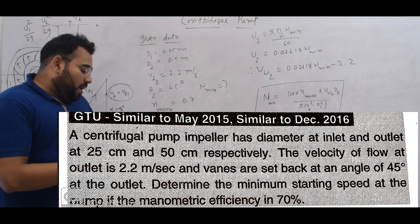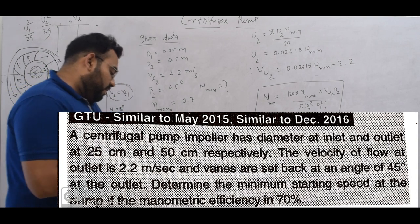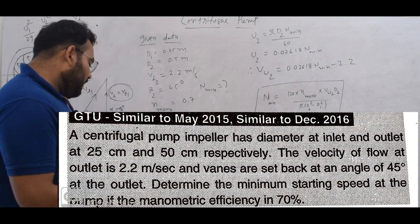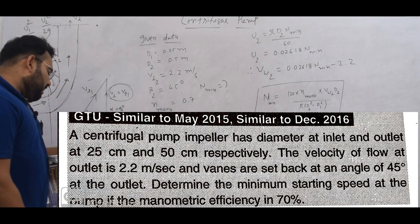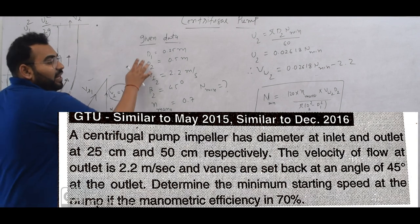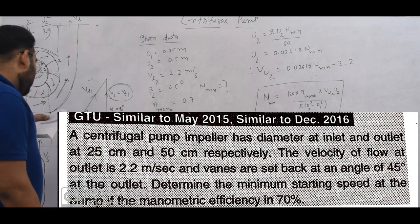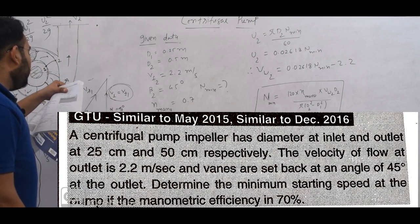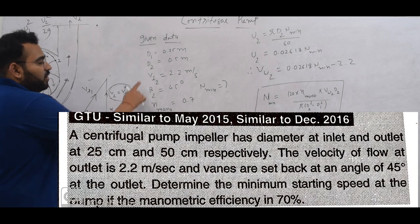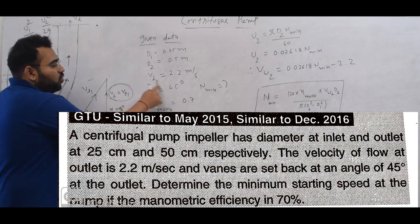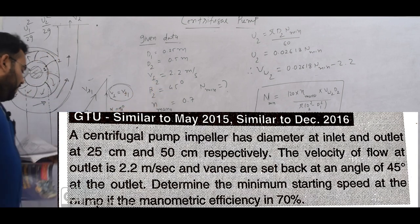A centrifugal pump has a diameter at inlet and outlet of 25 cm and 50 cm respectively. So in meters, D1 is 0.25 meter and D2 is 0.5 meter. The velocity of flow at outlet is 2.2 meter per second. At outlet, velocity of flow VF, VF2 is equal to 2.2 meter per second.